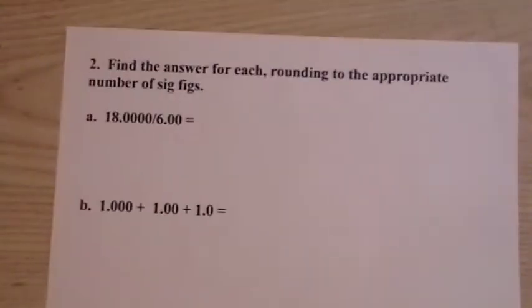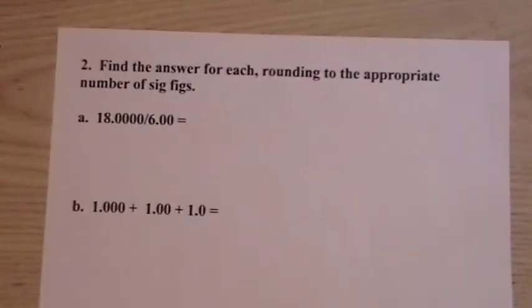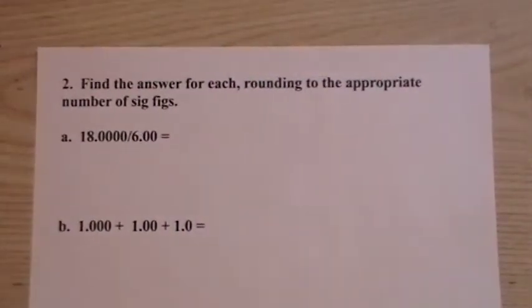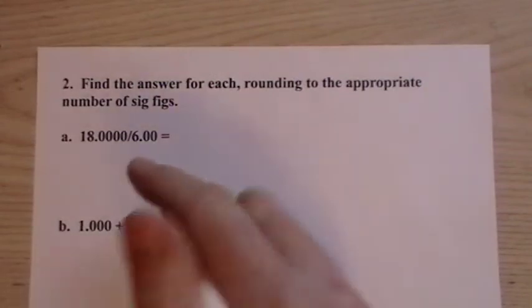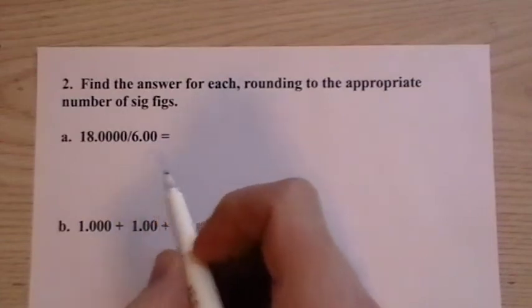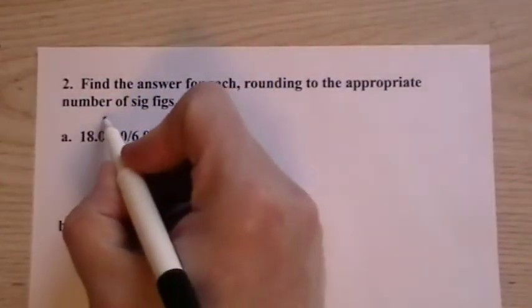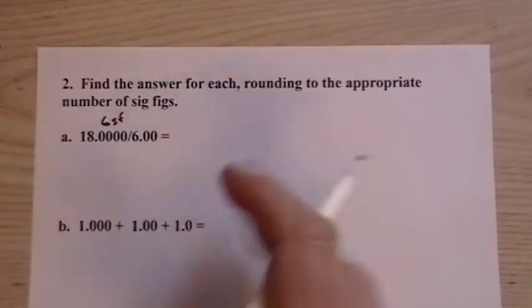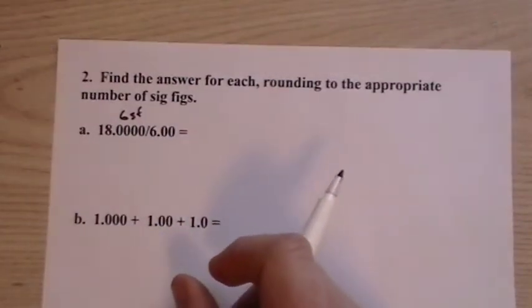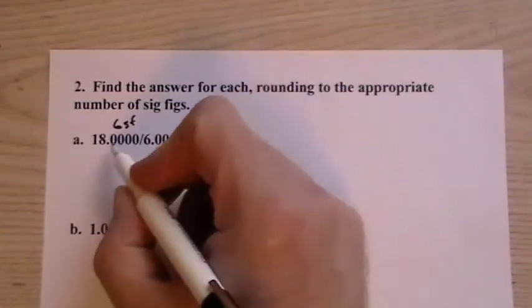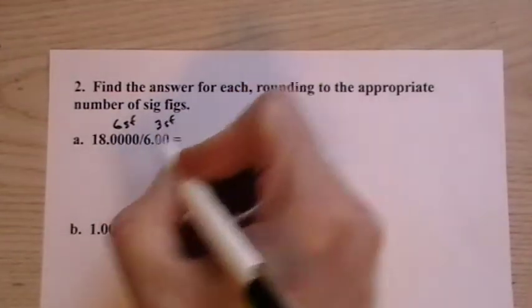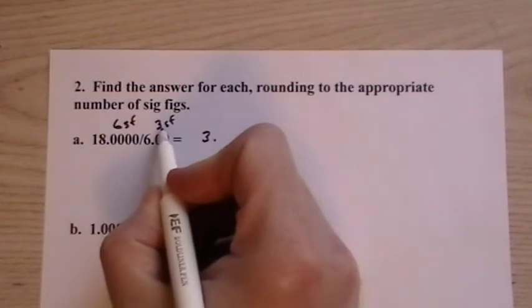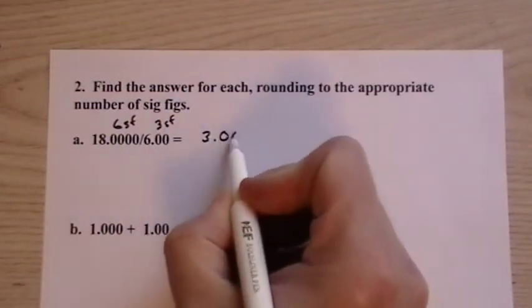Now, let's see number two here. Find the answer for each rounding to the appropriate number of significant figures. So we have division here. For multiplication and division, your answer is going to have as many significant figures as the measurement in the problem that has the least number of significant figures. So your first number here is six figures. These are measurements, so they should have units of measure. But traditionally, what you do is you leave the units of measure off so that you don't have to worry about them. This is three significant figures. So eighteen divided by six is three. So six and three here. So we already have one significant figure. So that's where we stop.